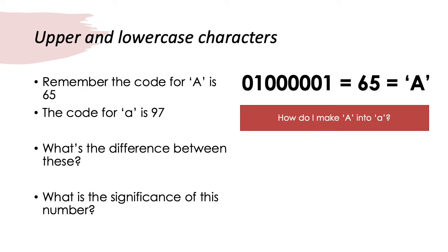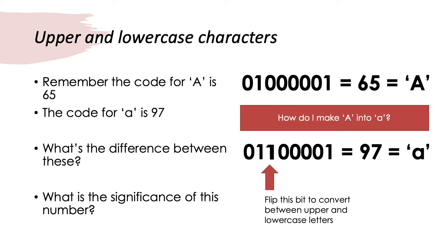But how do I make lowercase A? Well, to make lowercase A, I simply take the code for capital A and flip the 32nd bit. Because the difference between 97 and 65 is 32. So, if I flip this bit here, I now get the binary for 97. And 97 represents lowercase A.